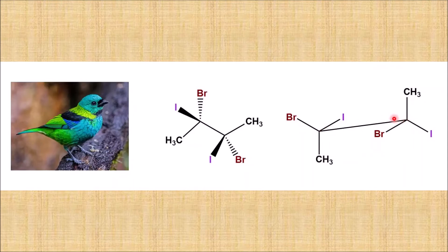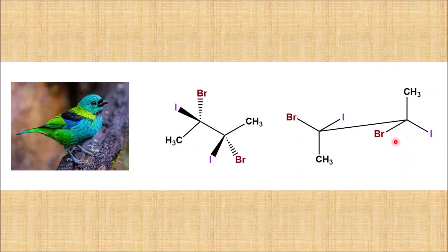Now let us see for the back or rear carbon. We do the same exercise: iodine on the right, coming out of the plane of the paper, appears on the right side, so we write iodine there. Similarly, bromine on the left, going into the plane of the paper, is written there. Finally, the methyl group, which is in the plane of the paper, will be at the top. This is how easy it is to convert wedge-dash projection formula to sawhorse projection formula.